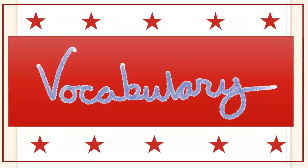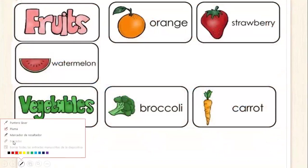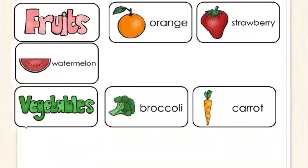We practice the following vocabulary. Repeat after me each word. We have the next fruits — repeat the word: fruits, like orange, strawberry, watermelon. Now we see fruits. Aquí vemos solamente fruits.